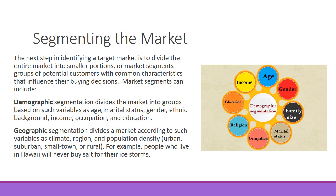The next step is segmenting the market — dividing the entire market into smaller portions or segments. These are groups of potential customers with common characteristics that influence their buying decisions. Market segments can include, most importantly, demographics. This divides the market into groups based on variables such as age, marital status, gender, ethnic background, income, occupation, and education — marketing different products to different groups.